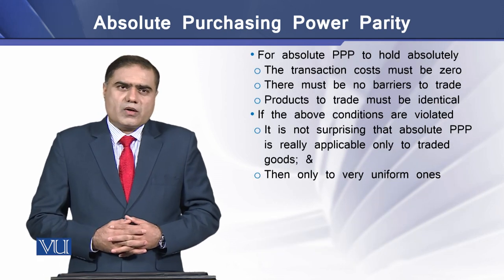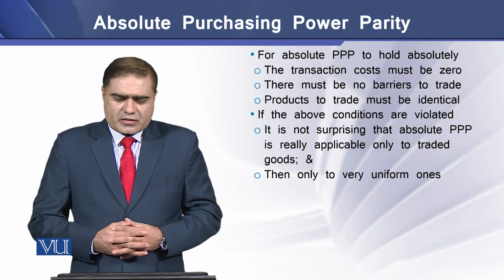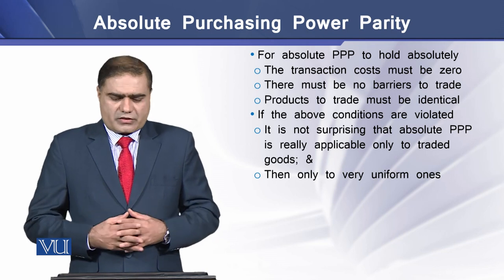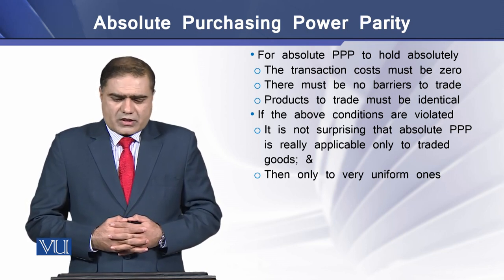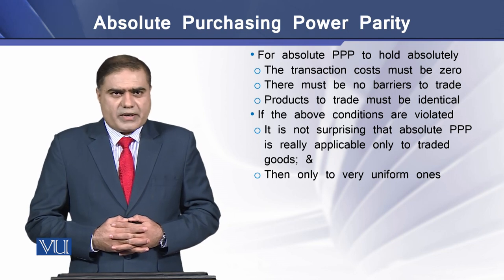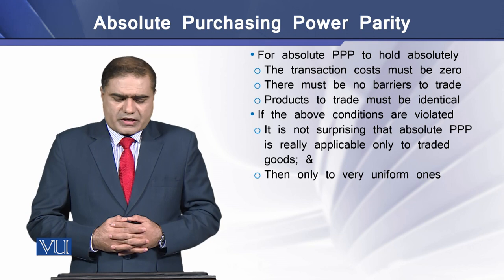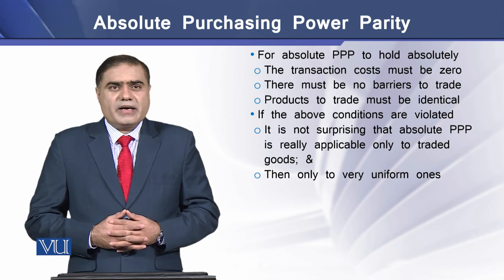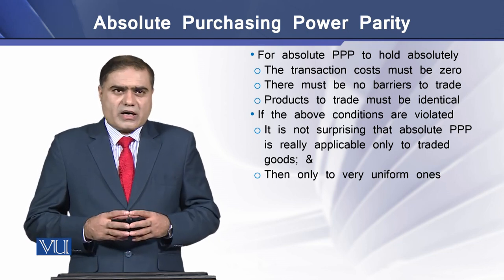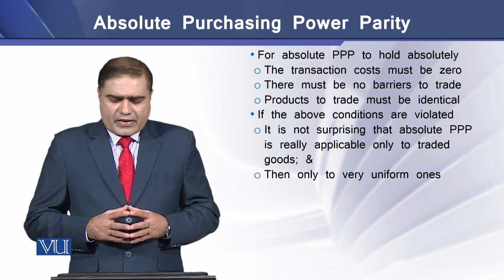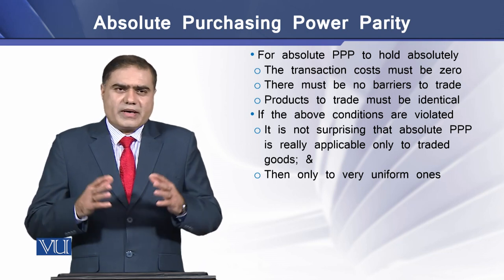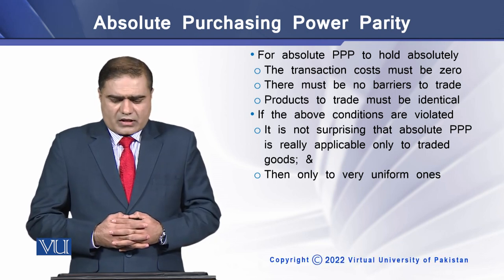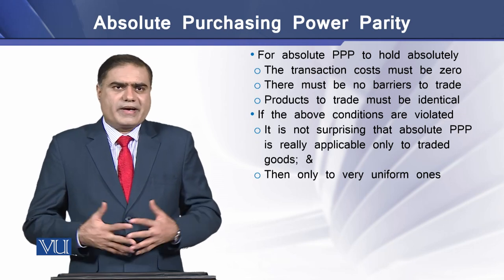For absolute purchasing power parity to hold true, there must be some prerequisites: transaction costs must be zero, there must not be any barrier to entry for trade, and the products being traded must be identical. If any of the above conditions are violated, it is not surprising that absolute purchasing power parity will not really be applicable to traded goods or uniform goods.